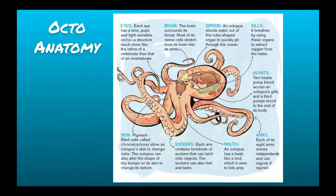This is octo-anatomy. Octo means eight, and that is because octopus have eight arms. Each of their arms can move independently and they have hundreds of suckers on them. Those suckers allow them to hold on to things and also feel and taste — it's kind of like if you had taste buds on your fingertips, but you had hundreds of them all over your arms.